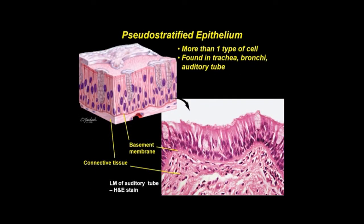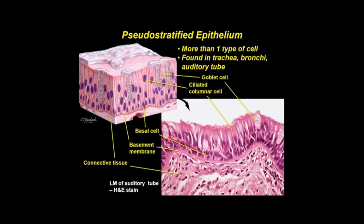Pseudostratified epithelium consists of more than one type of cell of varied size and shape. In sections, the nuclei usually appear at different levels, so two or three layers of crowded nuclei are seen. A basal layer belongs to replacement stem cells. More apical layers contain elongated nuclei of tall columnar cells, many of which may have cilia. Tall goblet cells secrete mucus. All cells contact an underlying basement membrane, but only some reach the free surface.